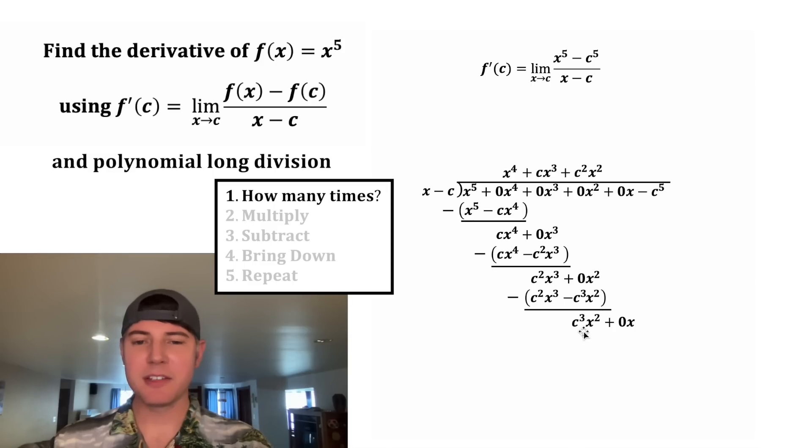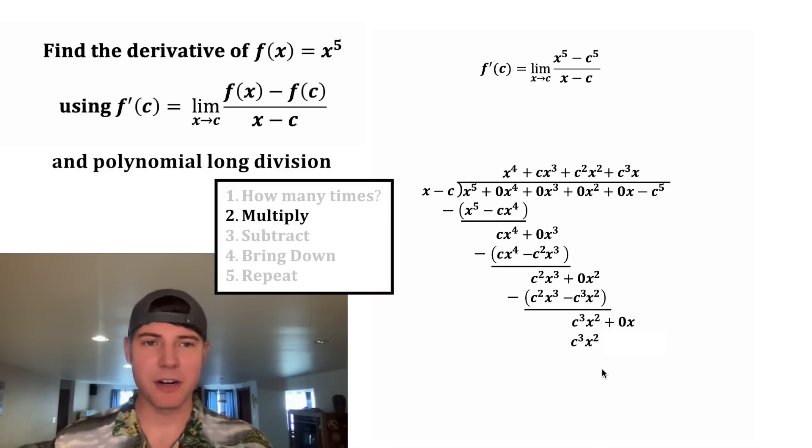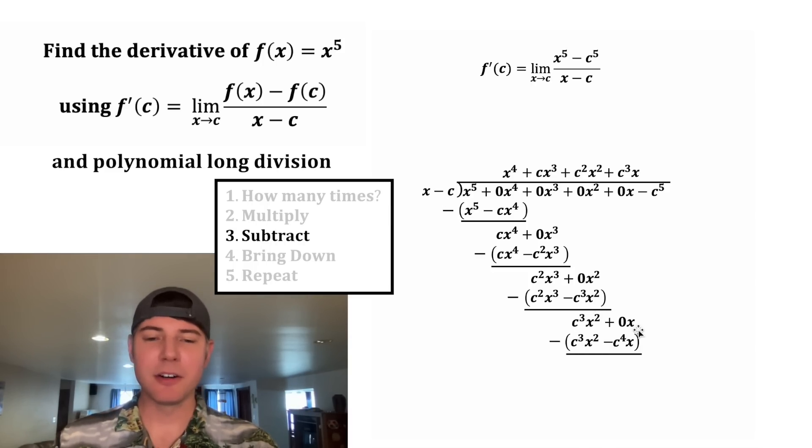How many times will x go into this? It'll be c³x times. And c³x times x is c³x². And c³x times negative c is negative c^4x. We can subtract this. These will cancel. And 0x minus negative c^4x is positive c^4x.